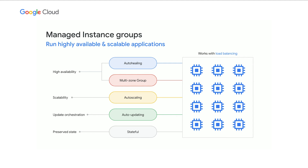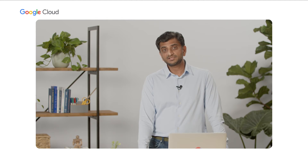For example, we can auto-heal applications. If some of the VMs in a group stop working, the rest of the VMs will take over the load. When the VMs are healed, they're put back into the group and start managing the load with the rest. We can also achieve auto-scaling and auto-updating. Importantly, managed instance groups are stateful, so you can deliver stateful applications, not just stateless ones.